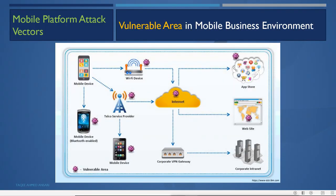What are the vulnerable areas in the mobile business environment? As we can see in this image, this is the whole environment for our mobile businesses. We have mobile devices, Bluetooth-enabled devices, and mobile devices with wireless networks. These devices connect to the wireless access point, through which they can also connect to wireless service providers and the mobile network service provider. We connect these devices to the internet through wireless and mobile networks.